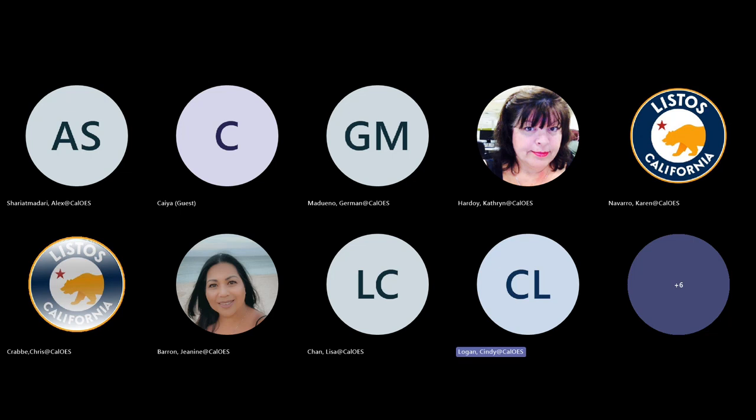There is a question in the chat: does there have to be sub-recipients, or would applying tribes be considered a sub-recipient? The applying tribe would be considered the sub-recipient. If awarded funds, you can sub-grant out to second-tier sub-recipients if you'd like, but it is not a requirement.